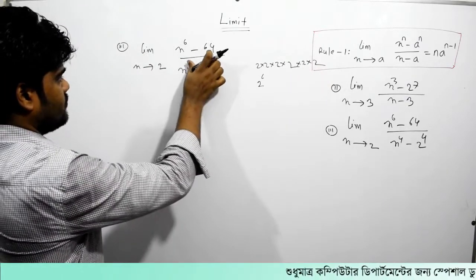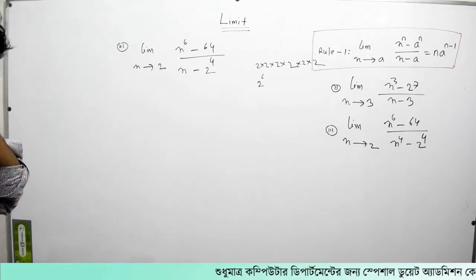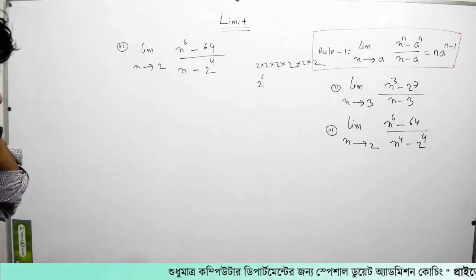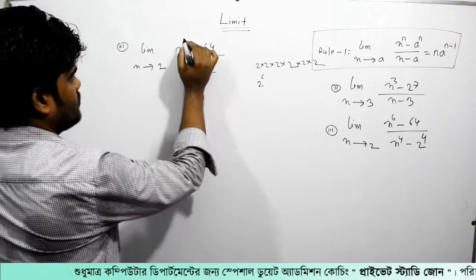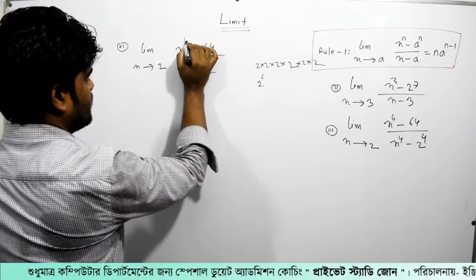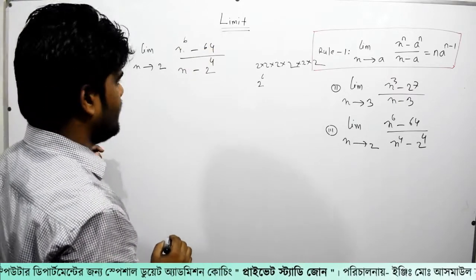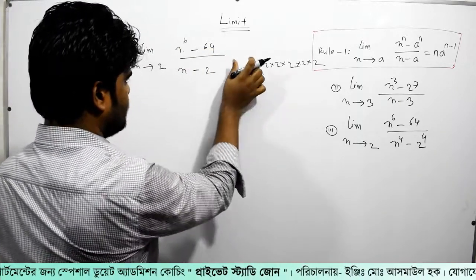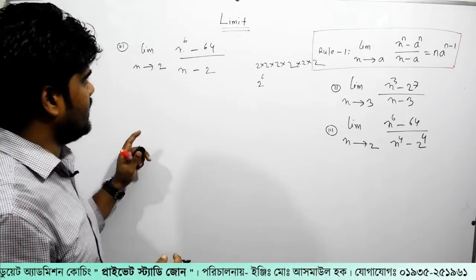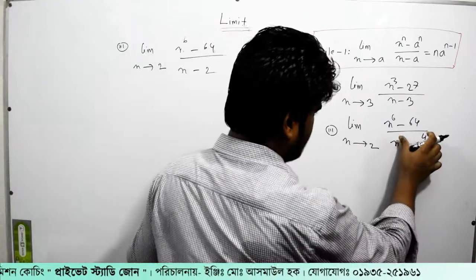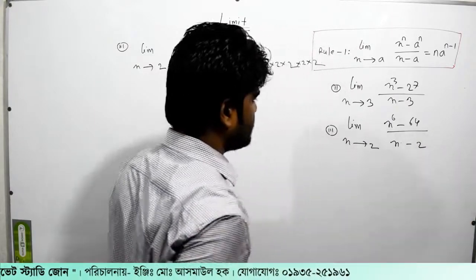That means we have to do this. We will add x to the power — let me add x to the power — x to the power 6 is equal to 9, and here again x minus 2 will be added. We will add x to the power 6 minus 64.